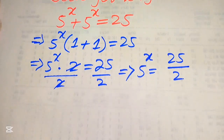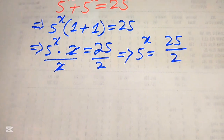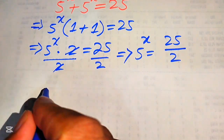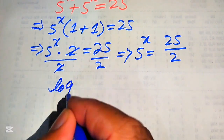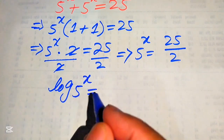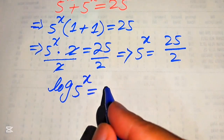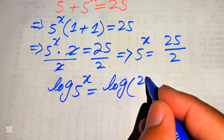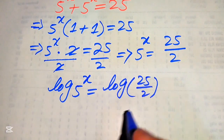Now for the value of x, we need to take the log on both of the sides. After taking log on both sides, it will be written as: log of 5 to the power of x is equals to log of 25 over 2.